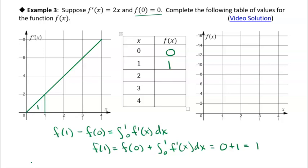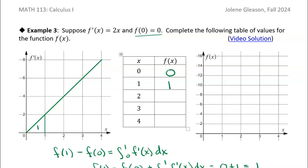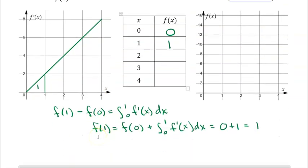Now I just have to keep doing that. Let me scroll down and give myself some room. I'll do one more here, and then I'll probably do the rest offline so this video doesn't get too long. So f(2) is going to be f(1) + ∫₁² f'(x) dx.